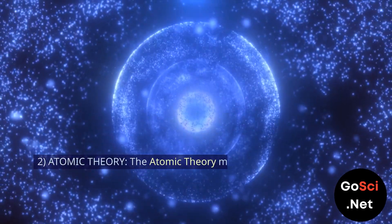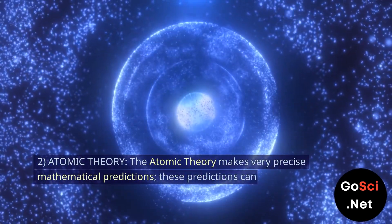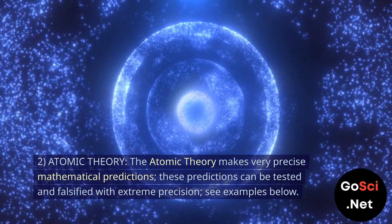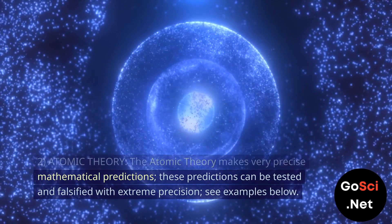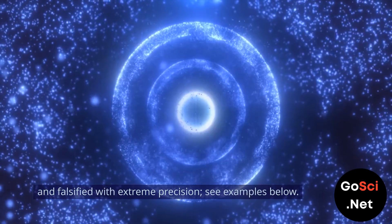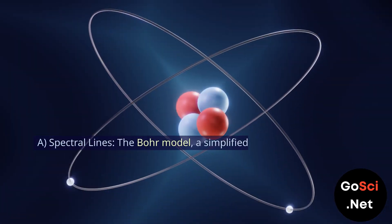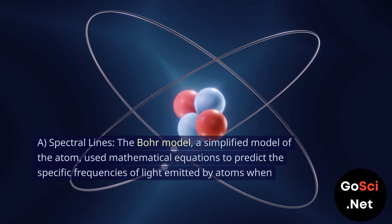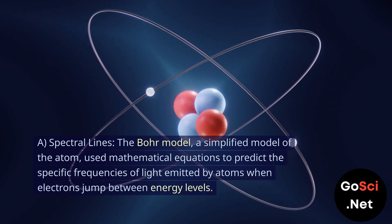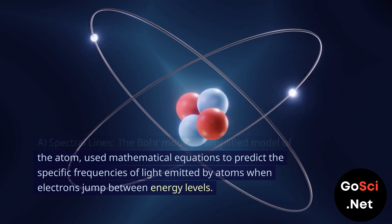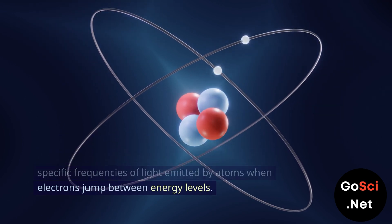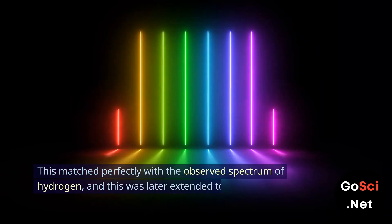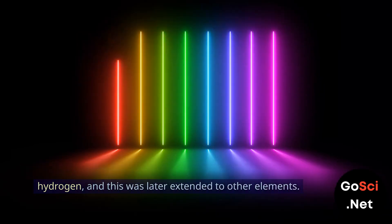2. Atomic Theory. The atomic theory makes very precise mathematical predictions. These predictions can be tested and falsified with extreme precision. A. Spectral Lines: The Bohr model, a simplified model of the atom, used mathematical equations to predict the specific frequencies of light emitted by atoms when electrons jump between energy levels. This matched perfectly with the observed spectrum of hydrogen, and was later extended to other elements.